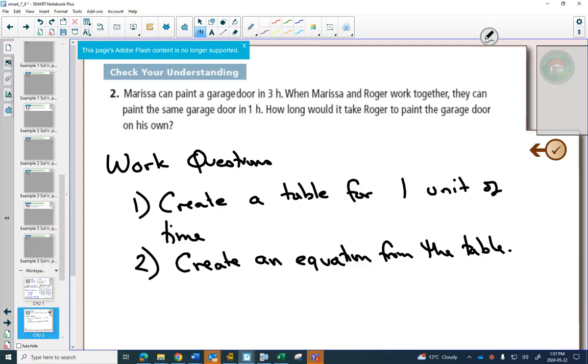Marissa can paint a garage door in three hours. Marissa and Roger work together. They can do the whole door in one hour. Based on that information, if you just said, hey, the next garage door is yours, Roger, how long is it going to take him to paint it?